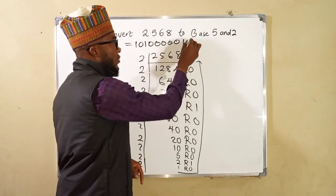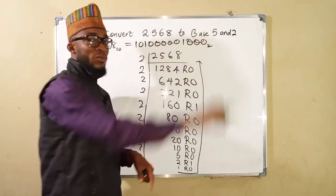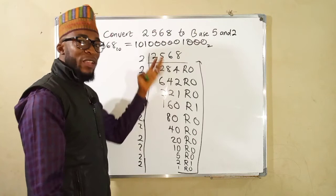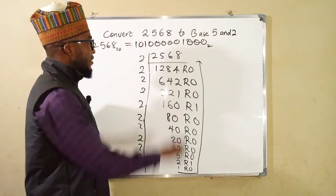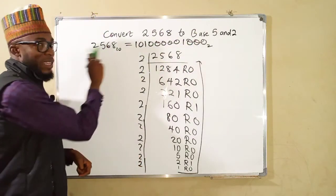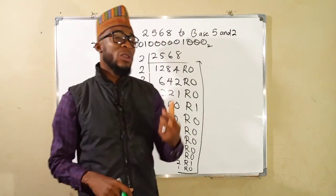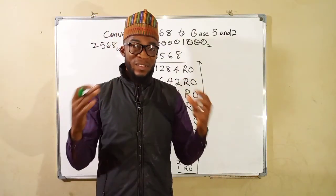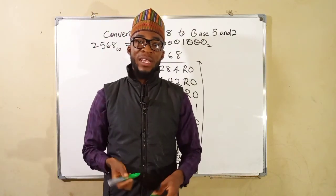But this number is in base 2. Remember I told you the highest digit in any number base is 1 less than the base, this is why we do not have 2 here, we do not have 10 here. So in our next class we shall see how to convert numbers in base 10 that are in decimal form to other bases. Thank you for fortune, do have a nice day.